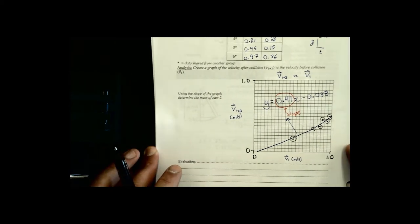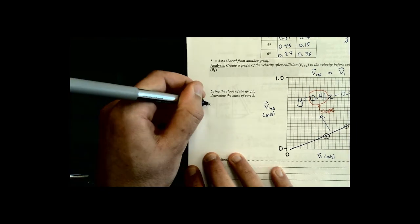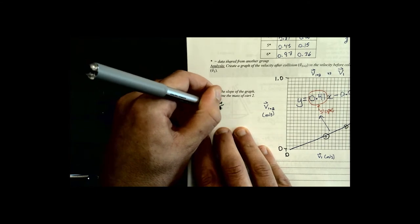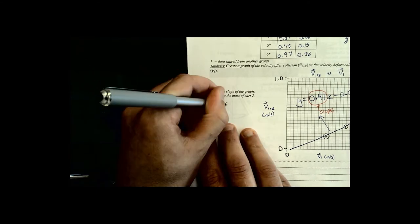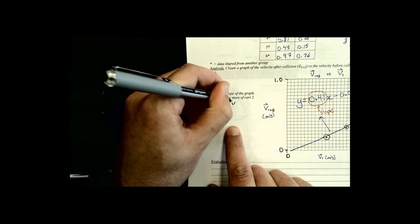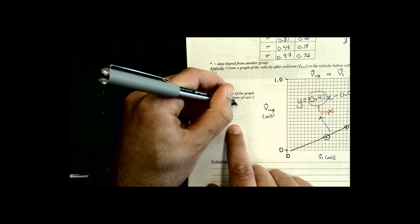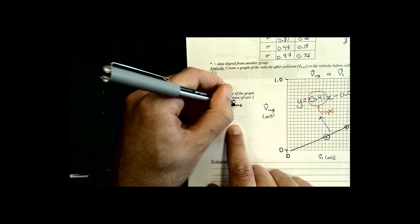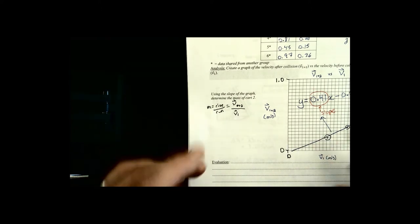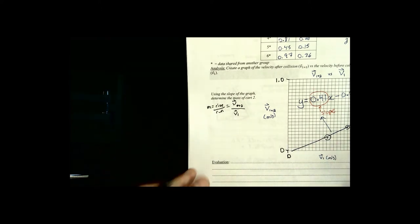Okay, so here we go. First things first, I'm going to write down what is our slope of this graph. So the slope m is rise over run. Our rise is v1 plus 2. That's our rise variable. And our run is the v1. So there we go. That's what our slope is equivalent to.